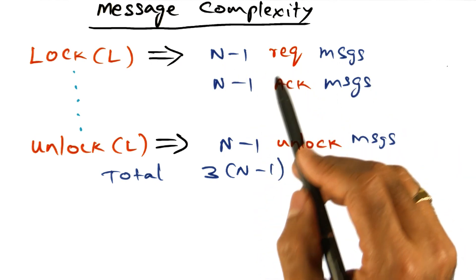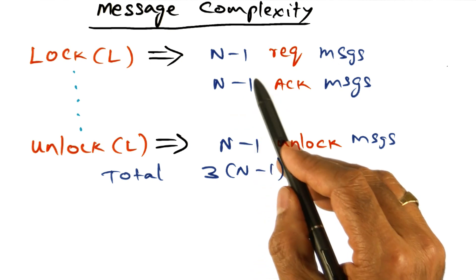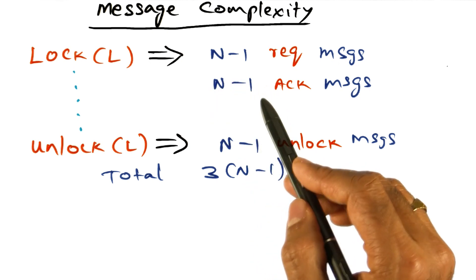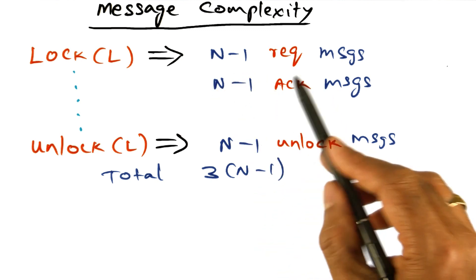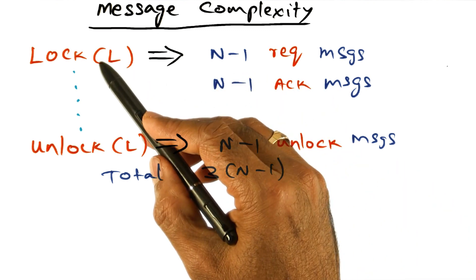And in response to these request messages, every peer is going to acknowledge a request message. So there are going to be n minus 1 messages traversing the network, which are the acknowledgement messages for this lock request.